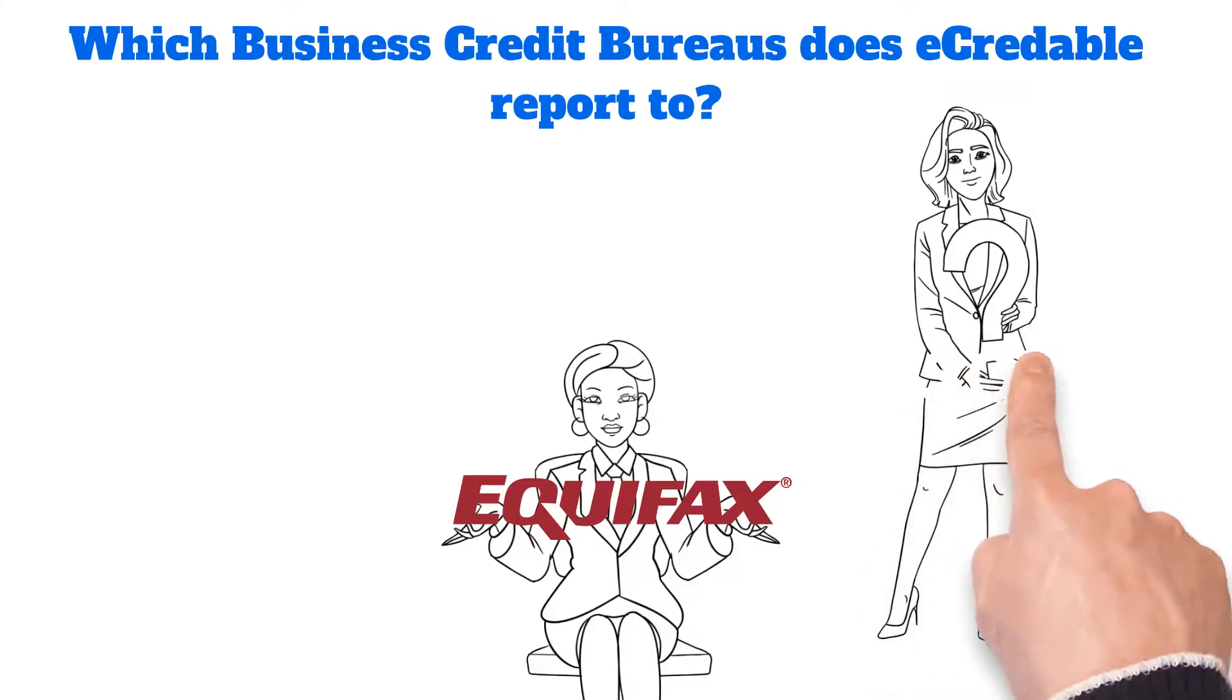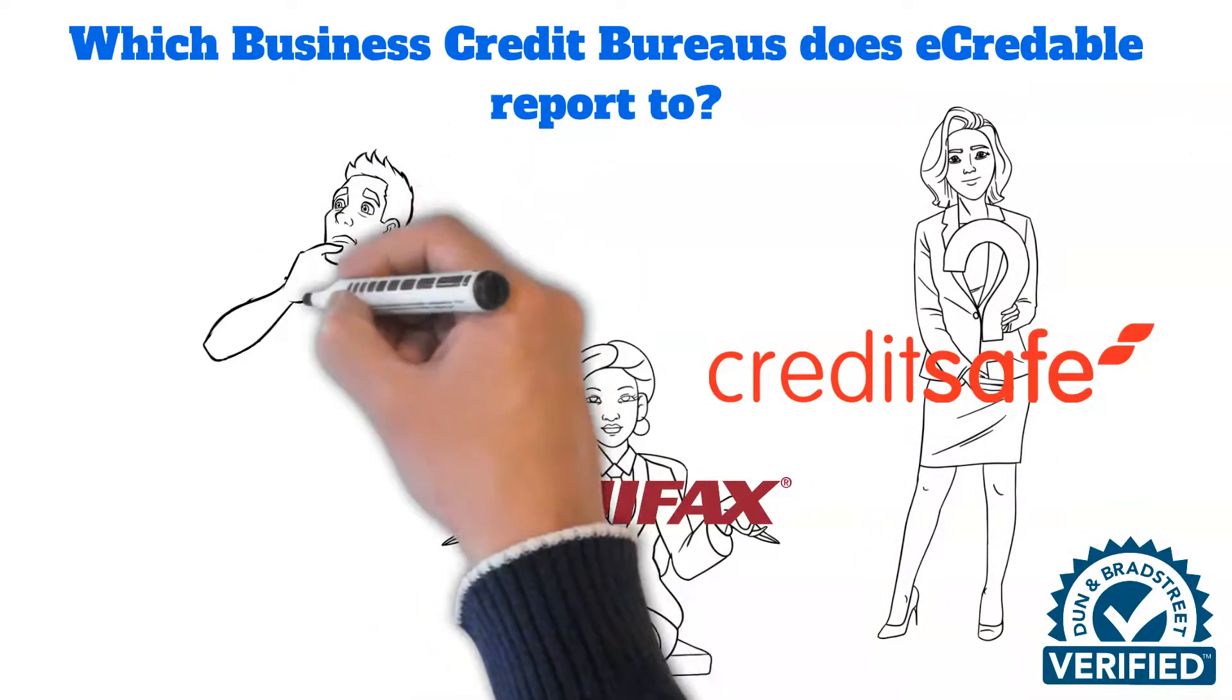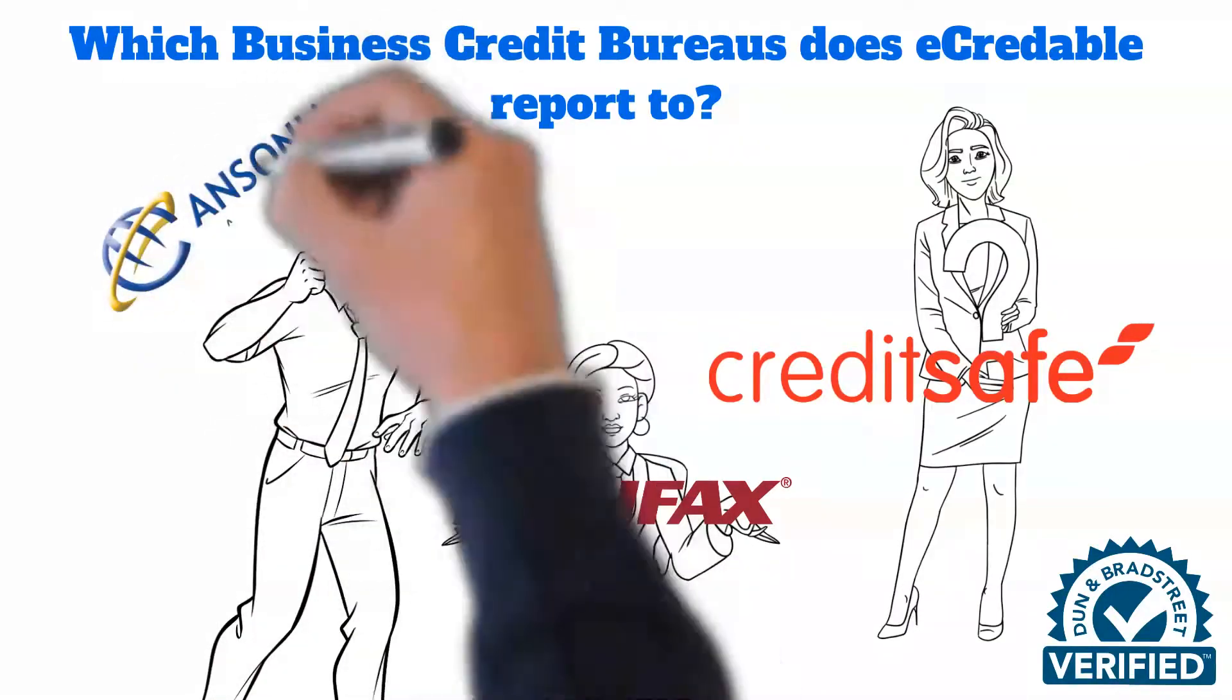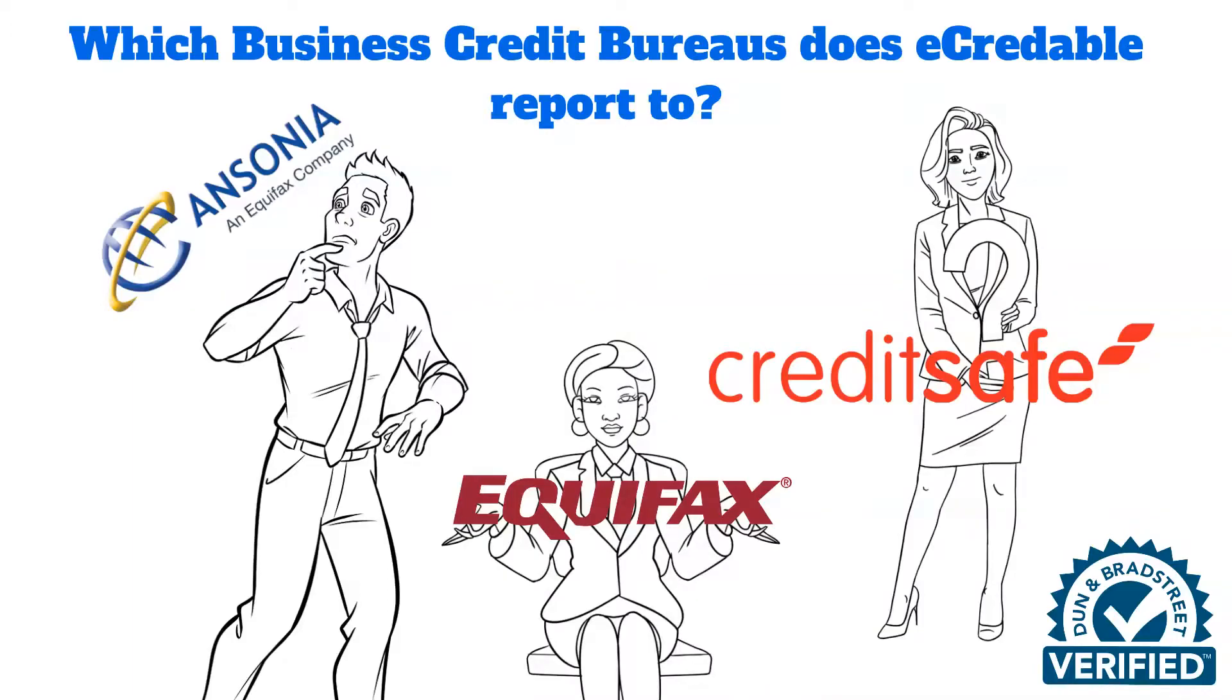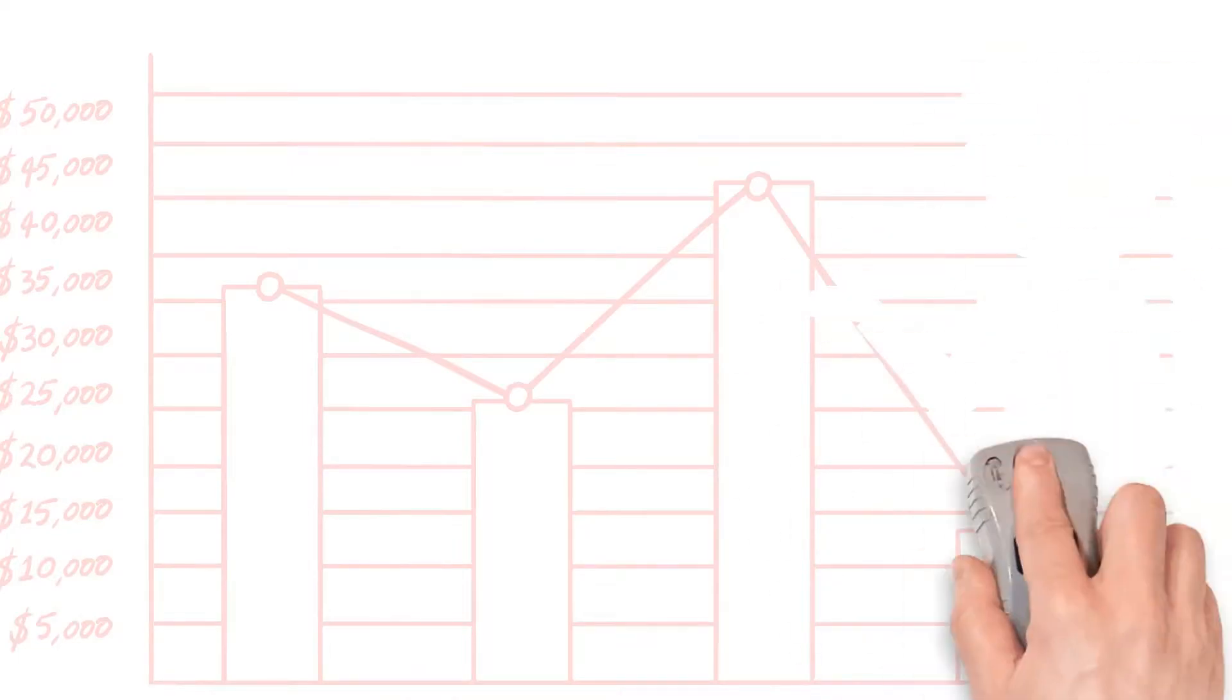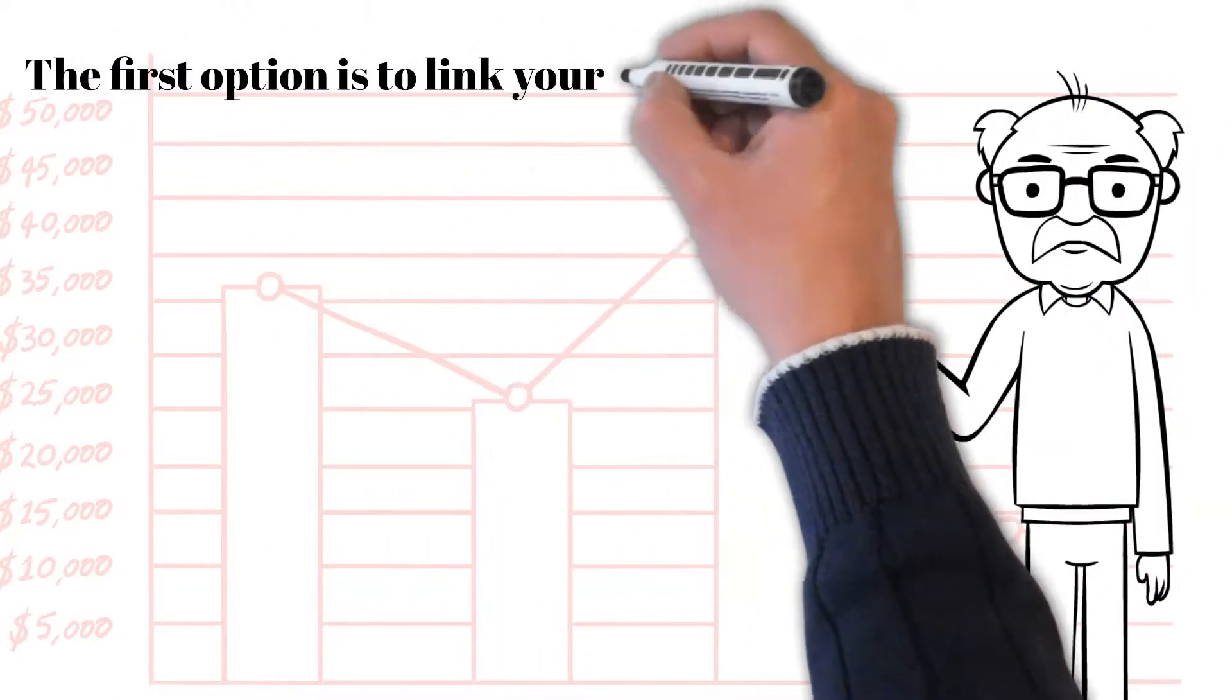There are two ways eCredible collects and reports your account information and payment history to the participating business credit bureaus. The first option is to link your account to eCredible.